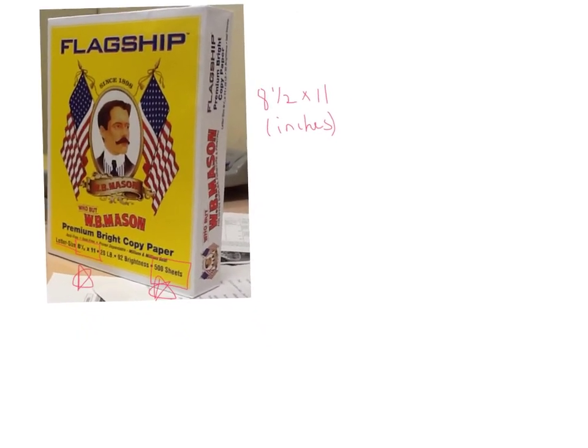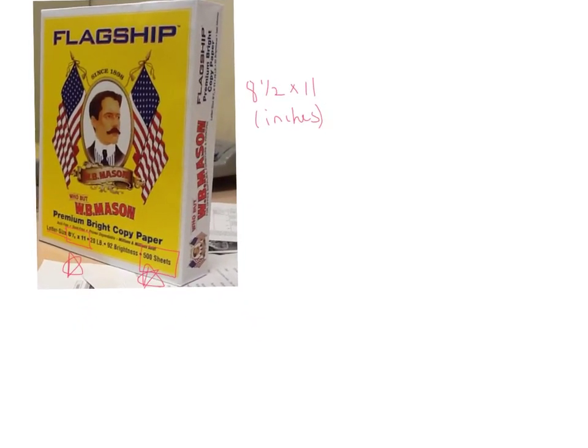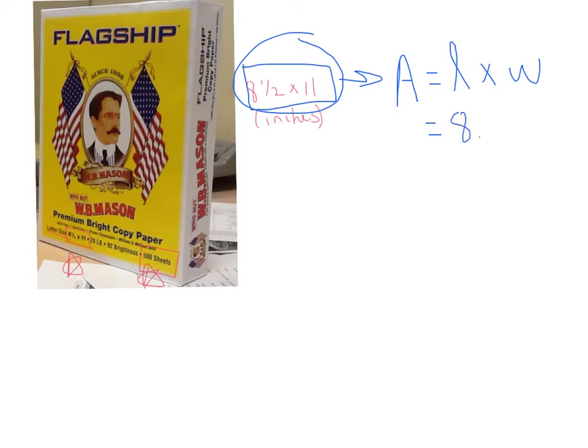Realizing that one piece of paper is a rectangle, we can find the area using our formula: area of a rectangle equals length times width. For this piece of paper, we plug in our information: 8.5 times 11. The product is 93.5, and since it's area, our units are inches squared.